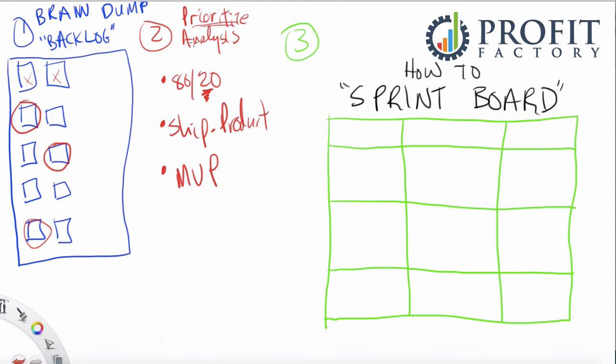A big part of this prioritization analysis is not only just picking the post-it notes, but also identifying what version of these post-it notes can you accomplish within a two-week period. And that's very much what the shippable product or the MVP part is about.